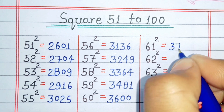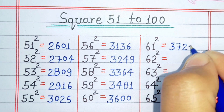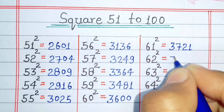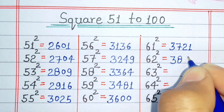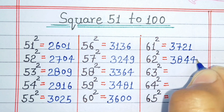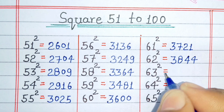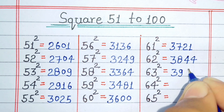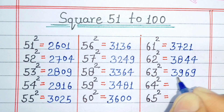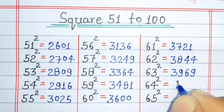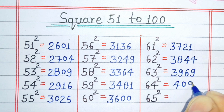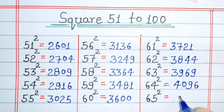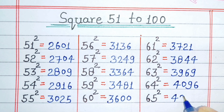Square of 61 is 3721. Square of 62 is 3844. Square of 63 is 3969. Square of 64 is 4096. Square of 65 is 4225.